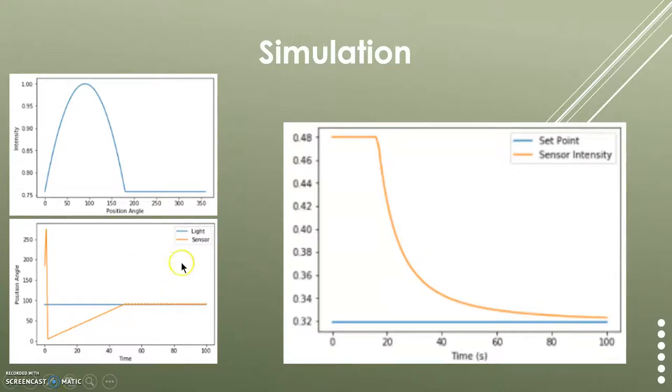That's part of the reason we wanted to go to a P-only controller. As you can see there's a much more dynamic response. As it starts far away from the set point it will quickly get closer and then slow down as it approaches the set point. This graph shows the intensity that the sensor is reading versus the intensity set point, and you can see that as the model is moving it gets closer to the set point with minimal oscillations.